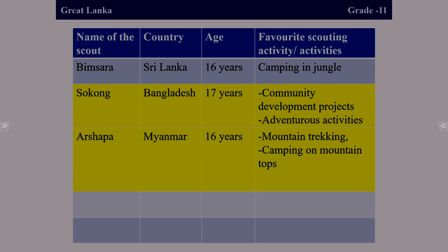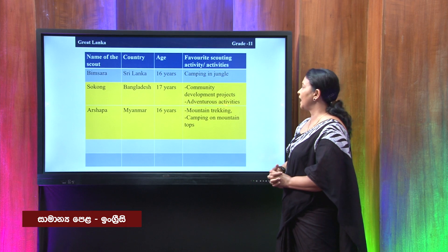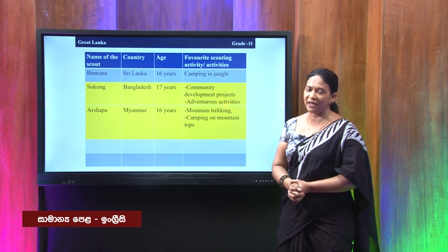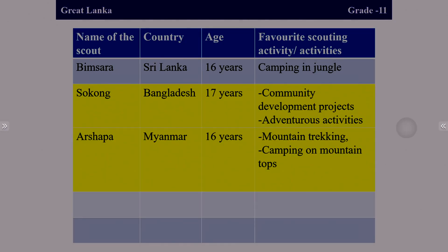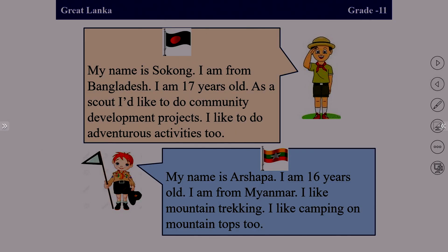Now look at the second scout: this is about Arshapa. Arshapa is from Myanmar, he is 16 years old, and mountain trekking and camping on mountain tops are his favorite scouting activities. Going back to read: 'My name is Arshapa. I am 16 years old. I am from Myanmar. I like mountain trekking. I like camping on mountain tops too.' By this time, you have got enough practice of transferring information from one text to another text.